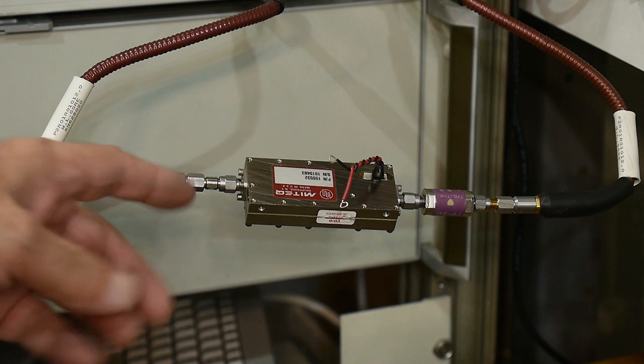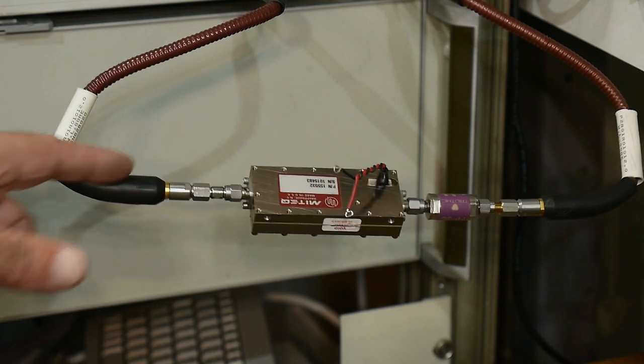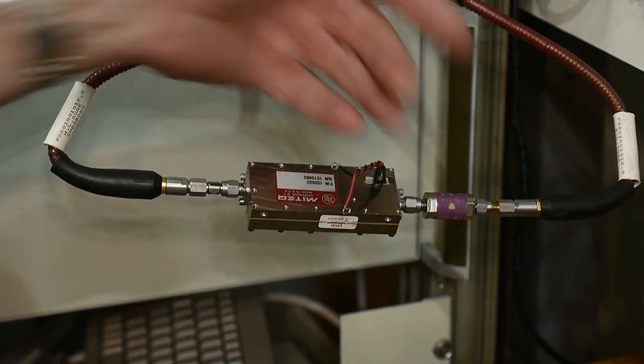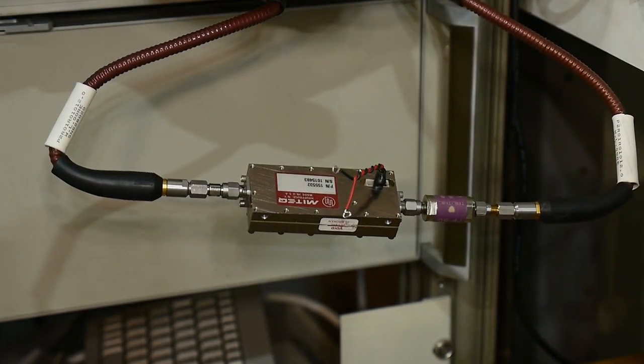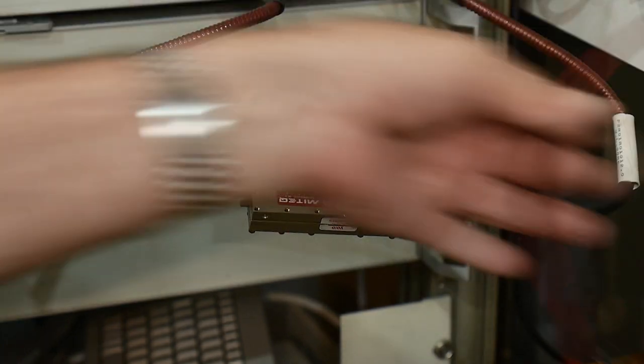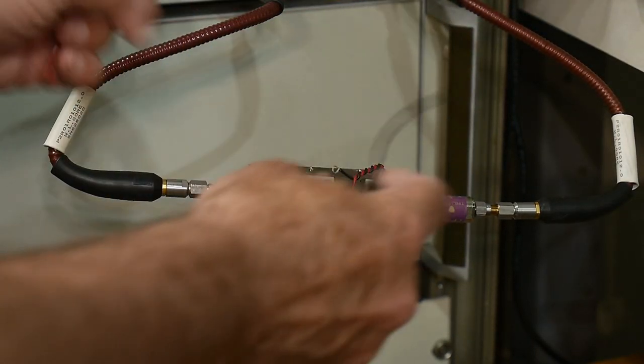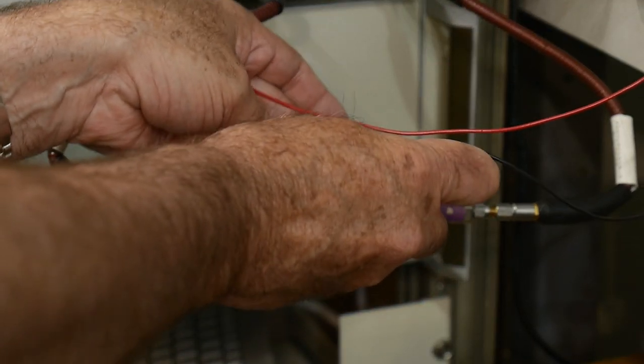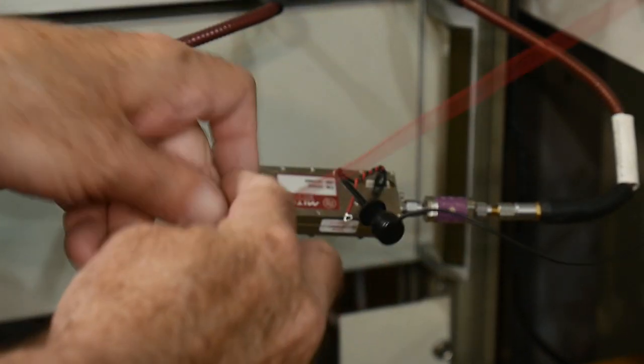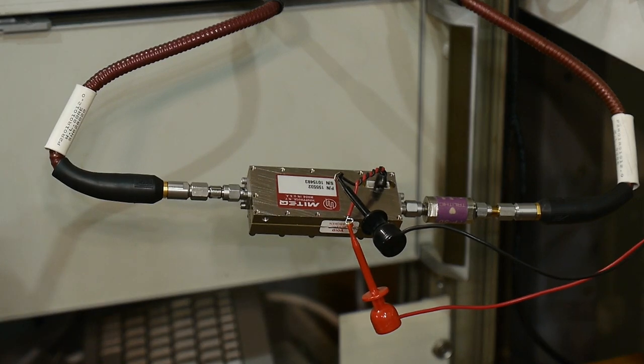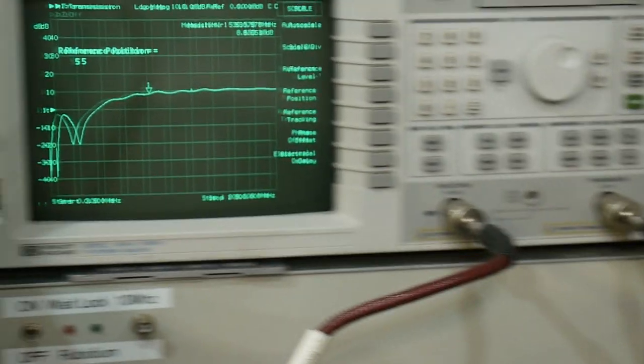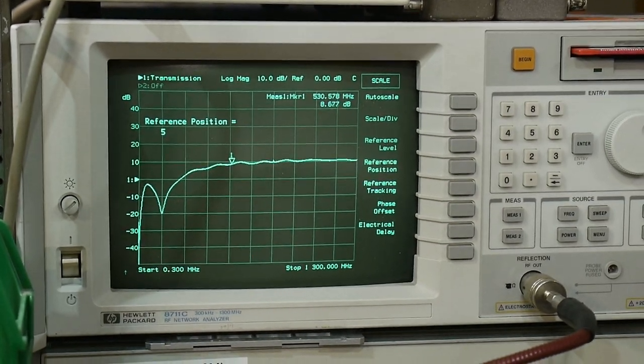So here we have the amplifier, here's the output of the VNA. It's going to go through the amplifier, it's going to come out the other side. There's a 20 dB pad here, and then it's going into the VNA. So we're all set to go. Now we just have to hook up some power, and I'm going to be running this at 11 volts. So I'm going to hook up the power, and then we will take a look at our result.